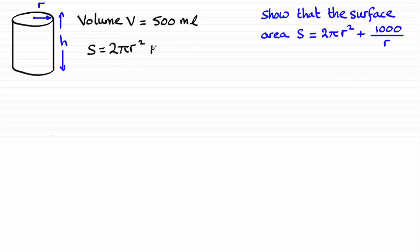Then we've got to add the curved surface area. If you were to look at the net of this, the curved surface area would be a rectangle. It would have a length equal to the circumference — two πr — and we would multiply that by the width of that rectangle, which would be h. So that is the curved surface area.